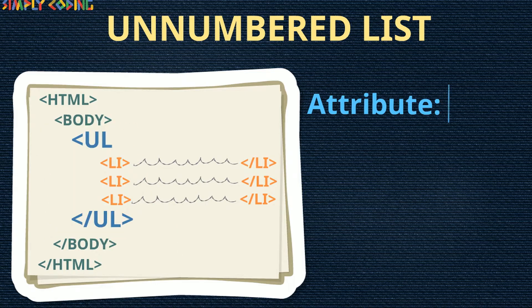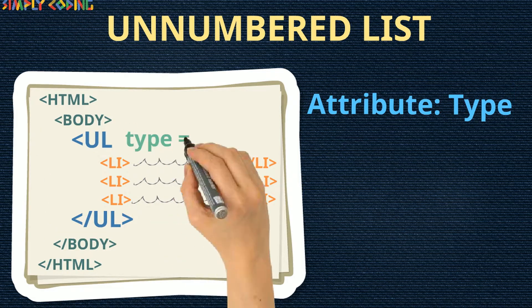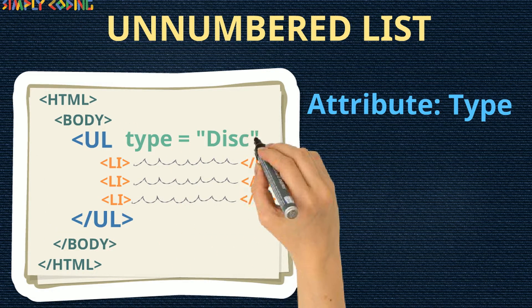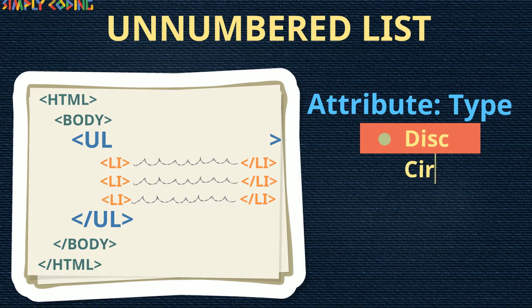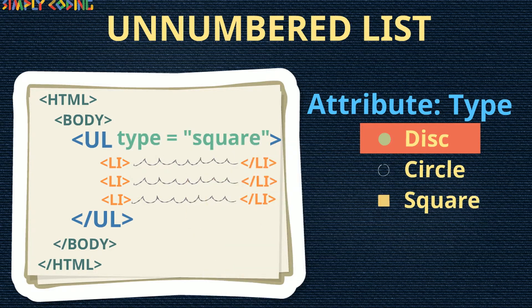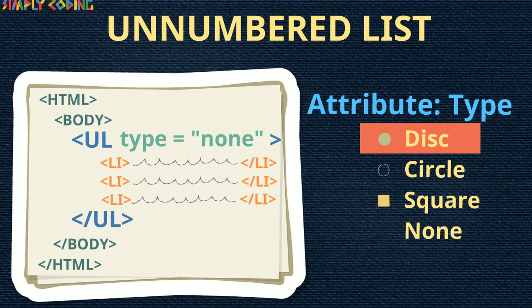The ul tag has one attribute: type. The default value for it is disk, which is a solid circle. Other values are circle, square, and none.